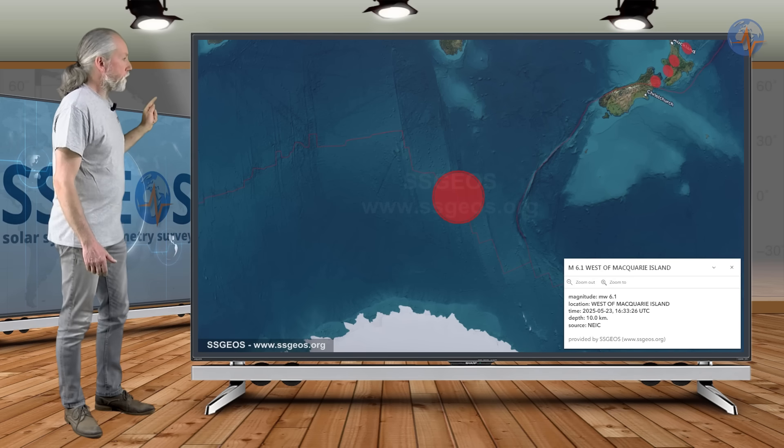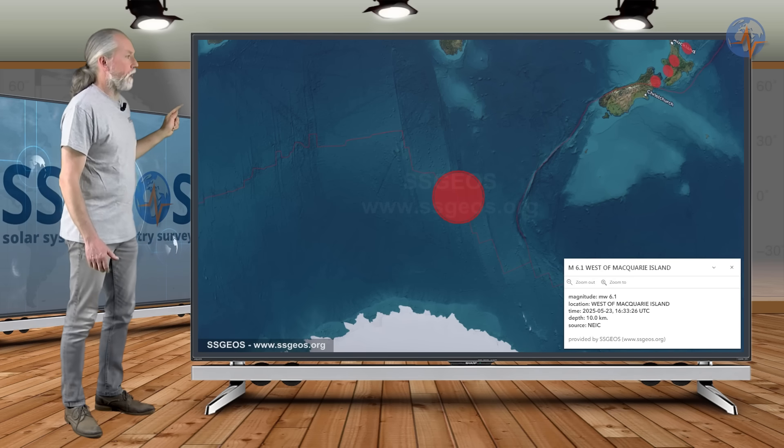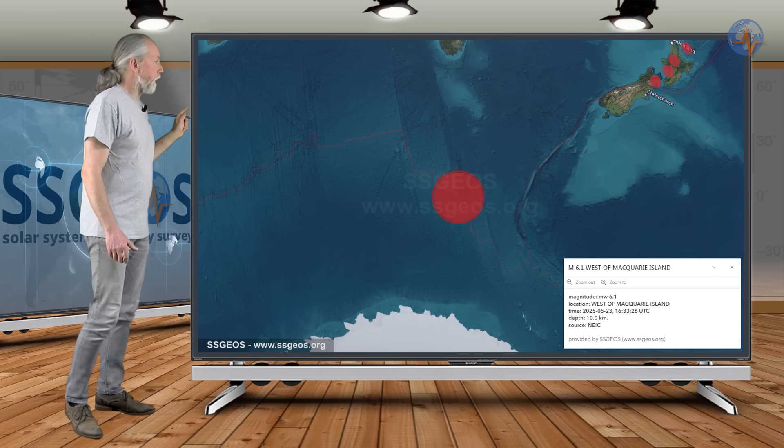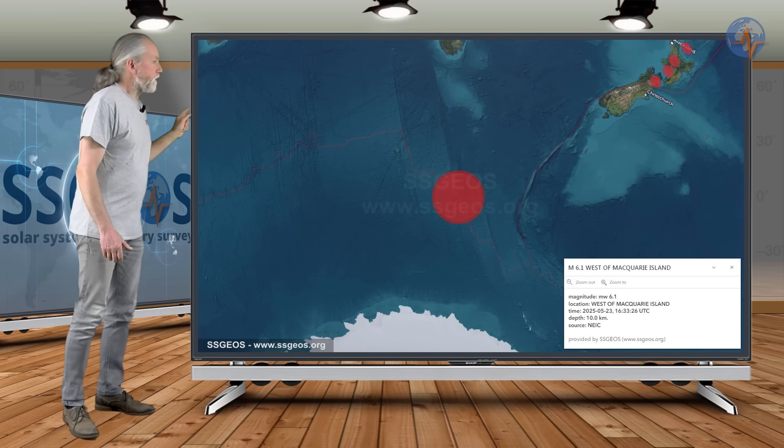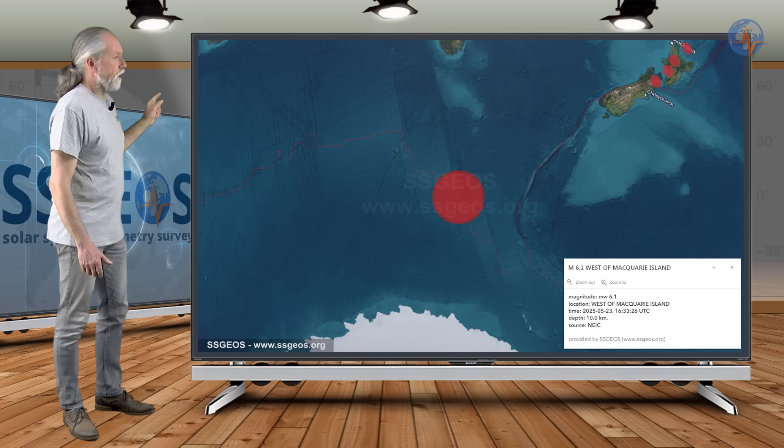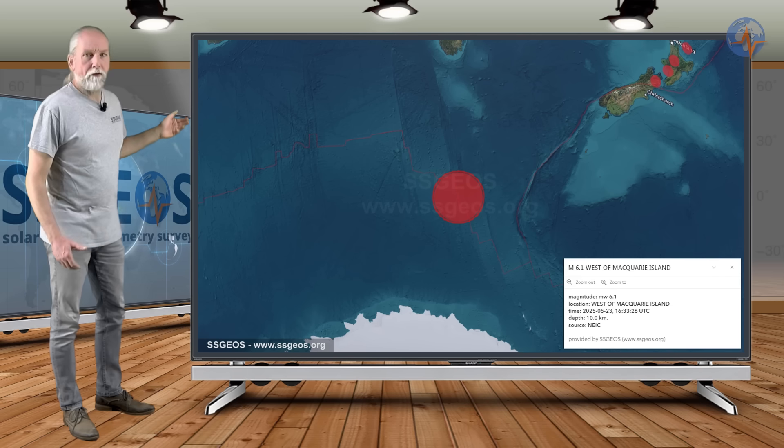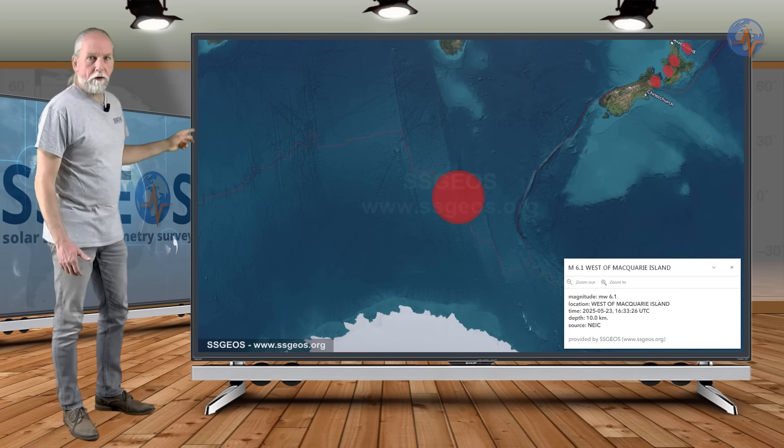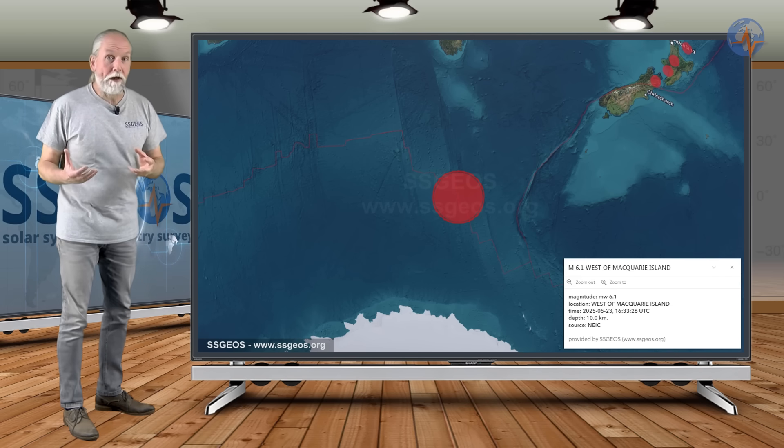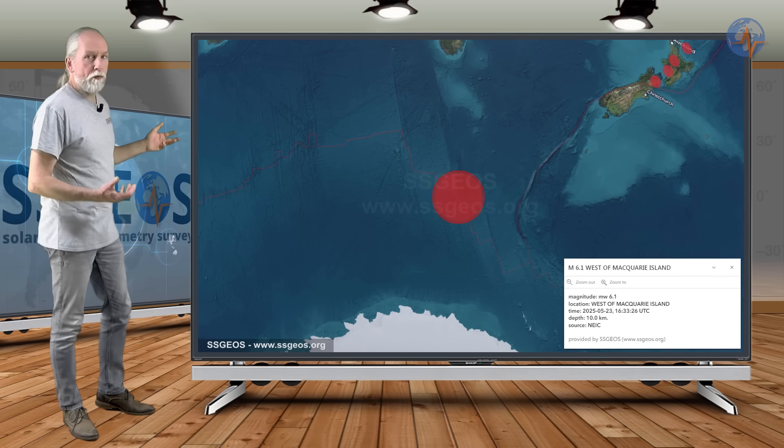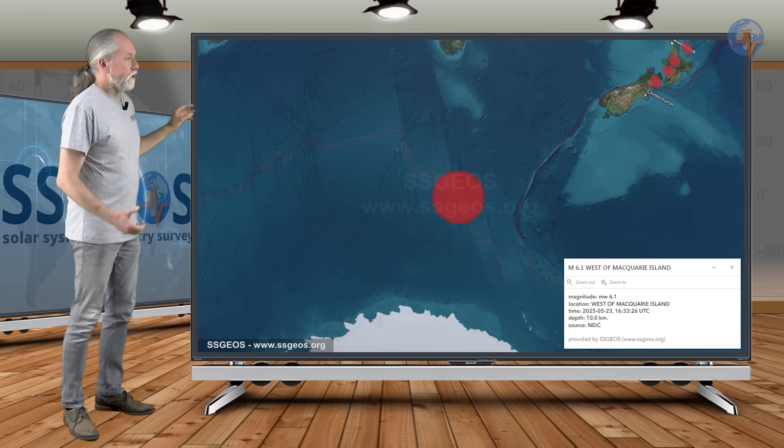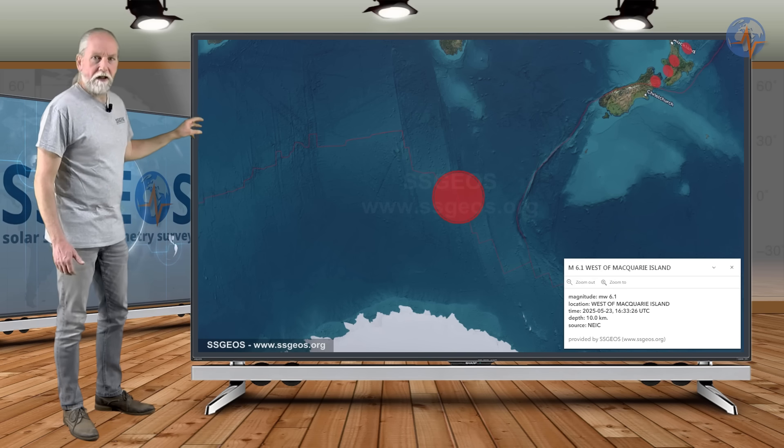And we also had a 6.1 magnitude earthquake at the Macquarie Islands region. And that is another strong earthquake south of New Zealand. Also something to be aware of. We had a magnitude 5 earthquake the other day in Australia that could be related. And this could also affect New Zealand in the short term.